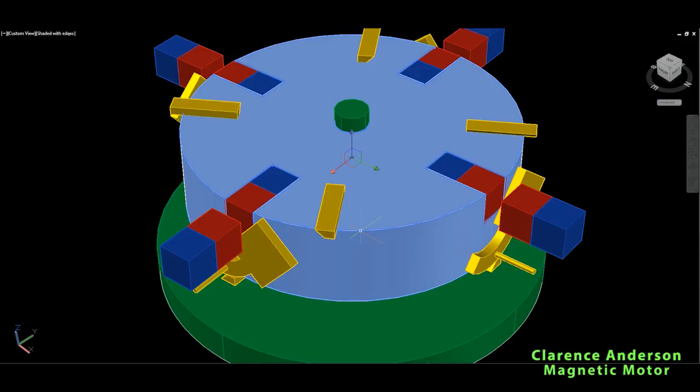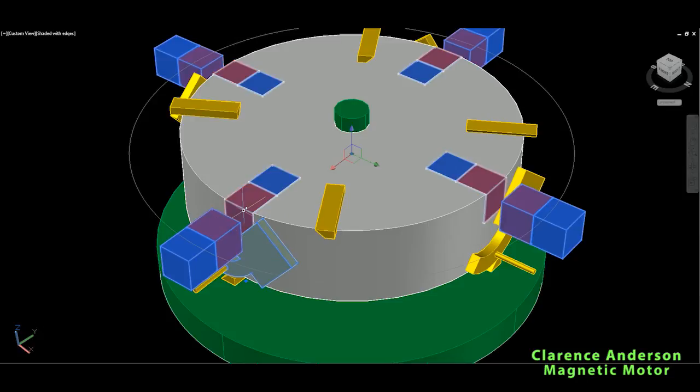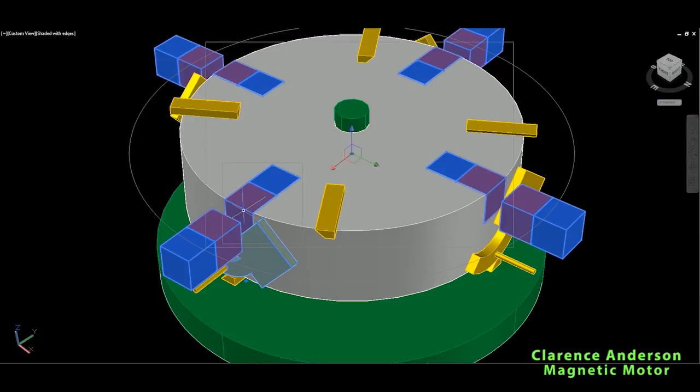But since we have this thick rotor which has a big mass, it will be used as a flywheel. The flywheel has a big mass and retains momentum, so this will not stop.